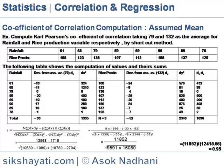The next column shows the rice production values from the given data. The following column shows dy, the deviation from the assumed mean of 132. The next column shows dy², the square of the deviation from the assumed mean. The last column shows the product of dx and dy, that is the deviation of x series multiplied by the deviation of y series.